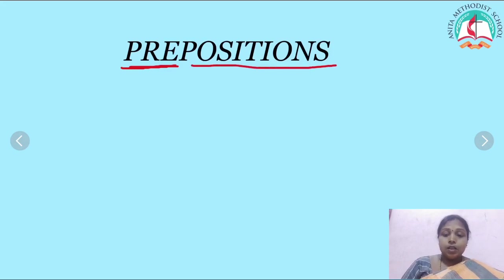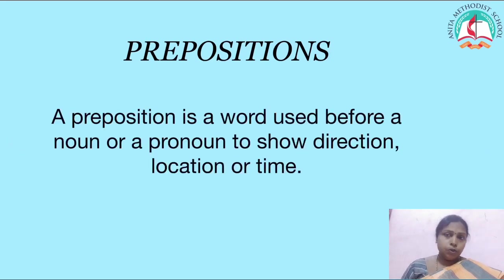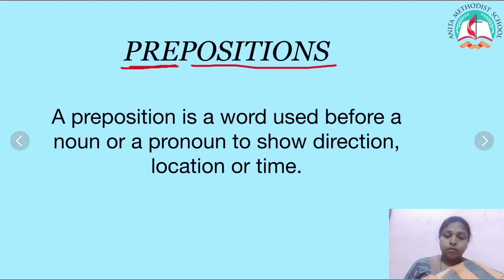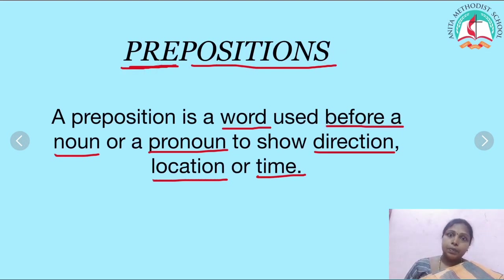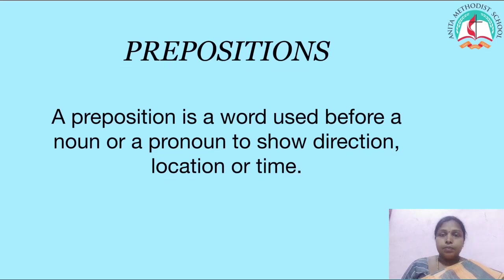Can you see the word preposition? Pre-position. What is meant by 'pre'? Pre is something which is added before. So from this word you can know that a preposition is a word which is placed before something. The definition for preposition is: a word used before a noun or a pronoun to show direction, location, or time.